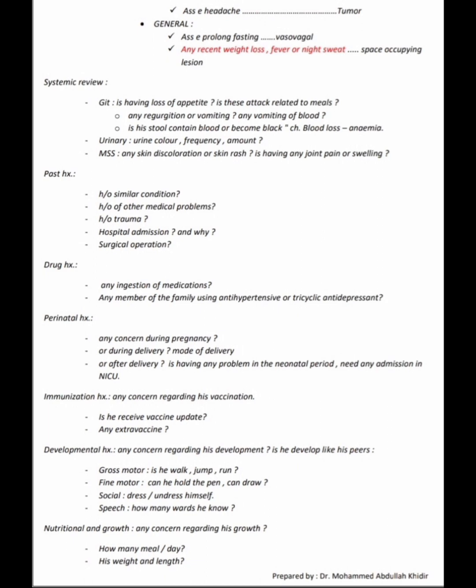Ask about immunization history — whether vaccinations are up to date and any extra vaccines received. For developmental history, ask whether development is on par with peers: gross motor (walking, jumping, running), fine motor (holding a pen, drawing), social (dressing/undressing), and speech (number of words known). For nutrition and growth, ask about meal frequency, weight, length, and growth chart centile.